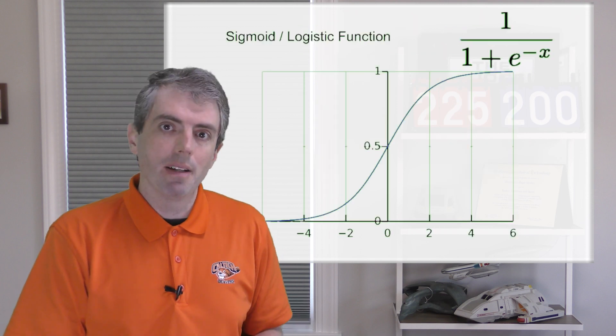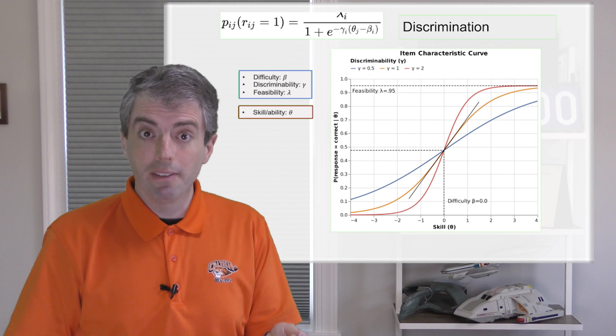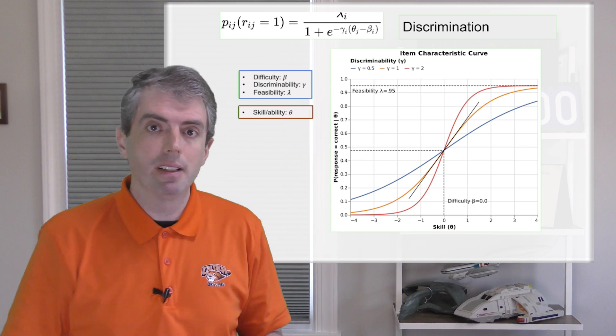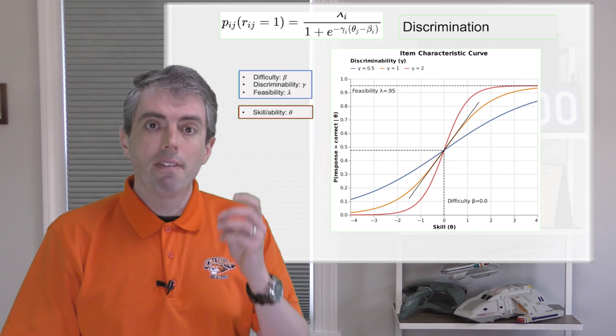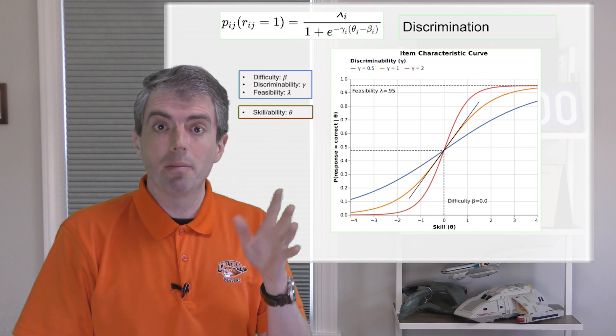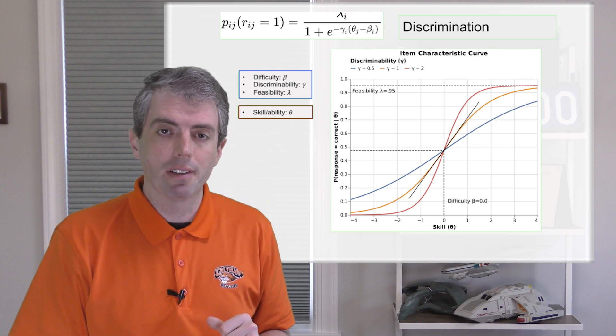So how do those two numbers feed into our sigmoid function? You take the difference between them. When the skill minus the difficulty is high, the higher the probability of the subject answering it correctly. If the skill matches the difficulty, then the subject has a 50-50 chance of answering correctly.